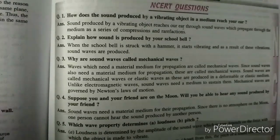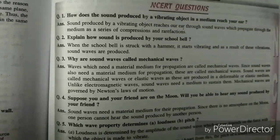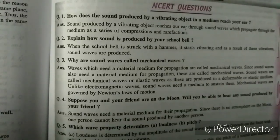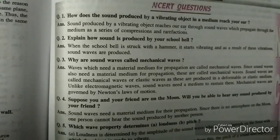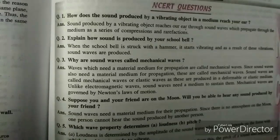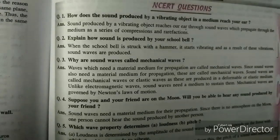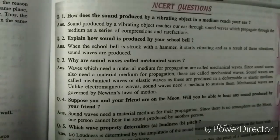How does the sound produced by a vibrating object in a medium reach your ear? Sound produced by a vibrating object reaches our ear through sound waves which propagate through the medium as a series of compressions and rarefactions.